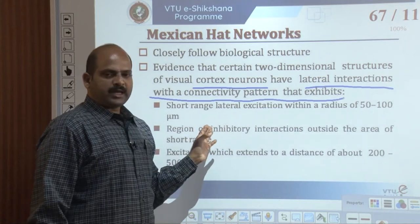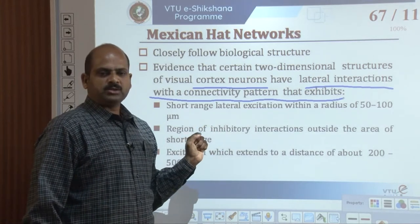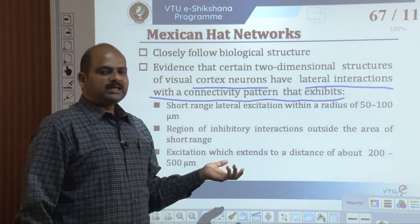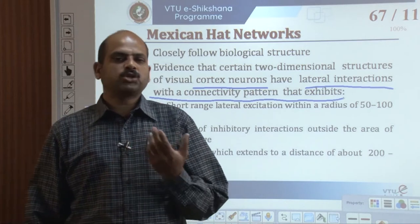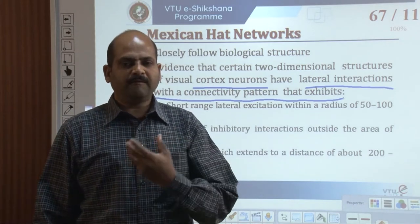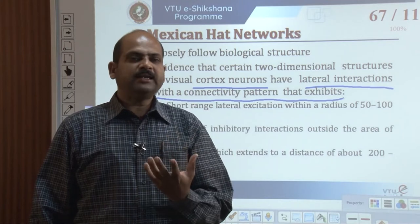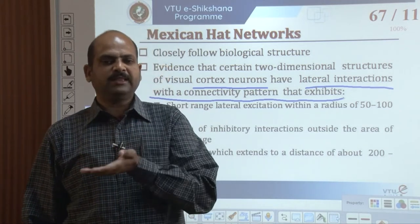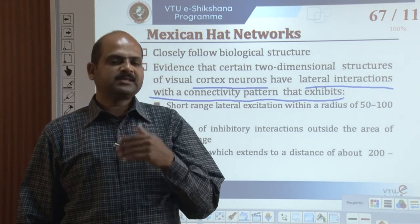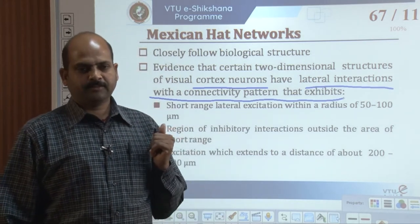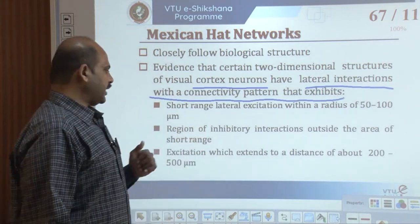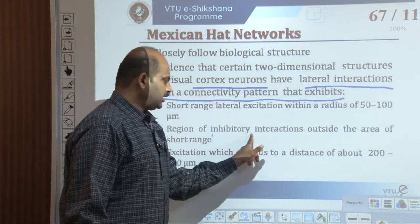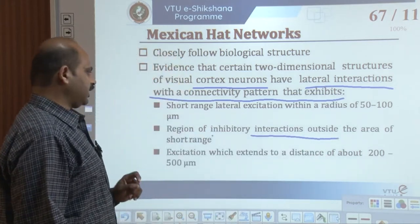This section introduces a network design that permits soft competition. Instead of having a single winning neuron, a cluster of neurons around the winner retains its final signal level while all other neurons have their signals suppressed. In this design, there is a region of inhibitory interactions outside the area of short-range excitation.